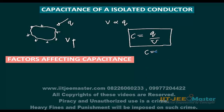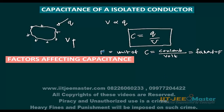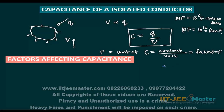What is the unit of capacitance C? It is Coulombs per Volt, which is known as Farad, denoted as F. The unit of capacitance is Farad. In practice, we use smaller units: microfarad (μF), which is 10 to the power minus 6 Farad, or picofarad (pF), which is 10 to the power minus 12 Farad. Farad itself is a very large unit.